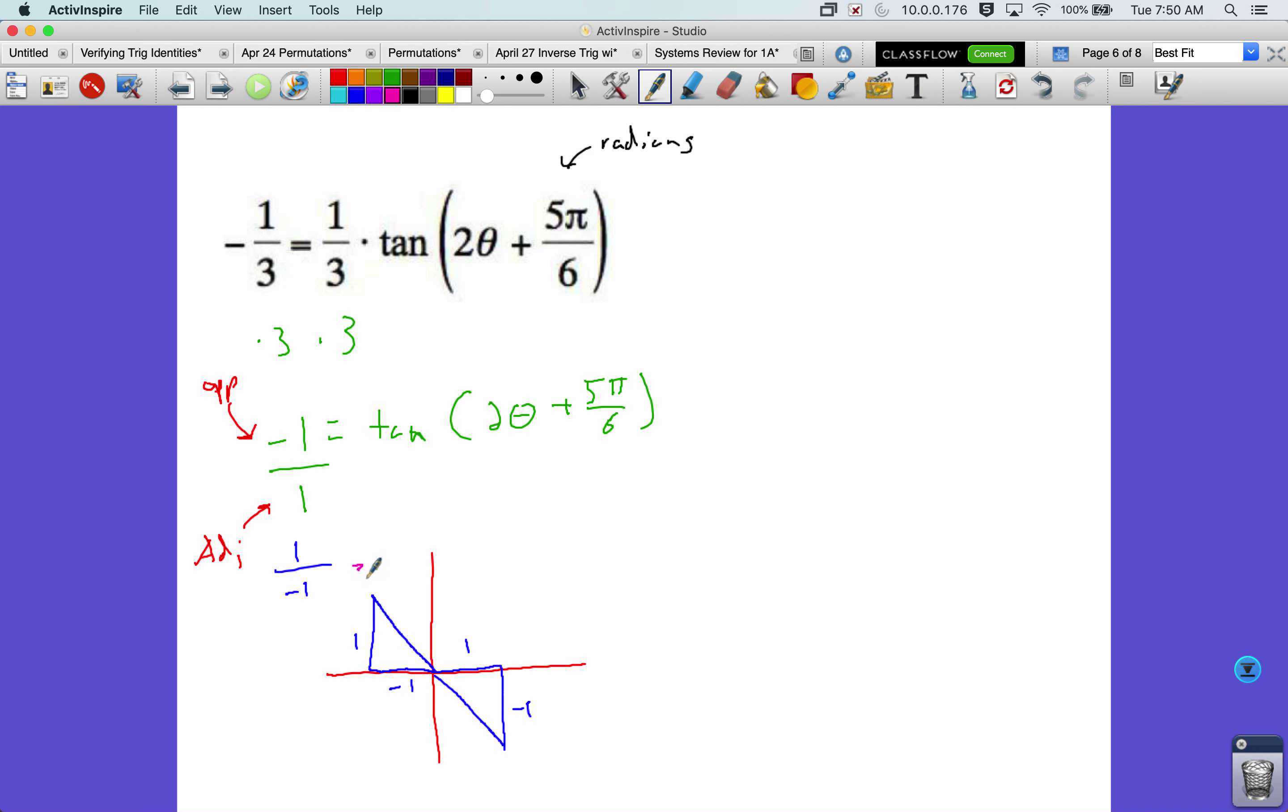So, the angle measurements are 3 pi over 4 and 7 pi over 4. But this is, one thing about tangent is that these will always be pi units apart. So, we can just focus on that first answer, the 3 pi over 4. So, this here, the 2 theta plus 5 pi over 6 is equal to 3 pi over 4 plus pi n. Now, let's get theta by itself. And it's plus pi n because it's tangent. These are always pi units apart.